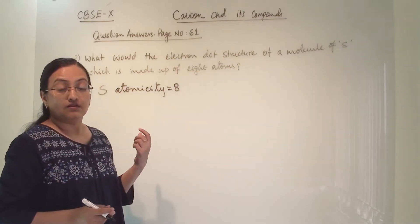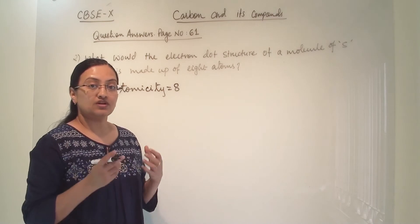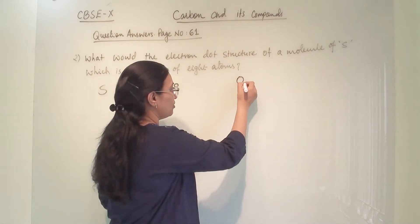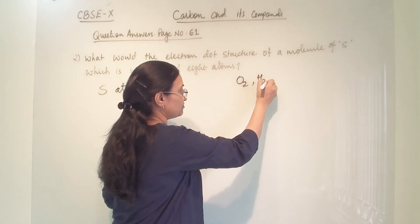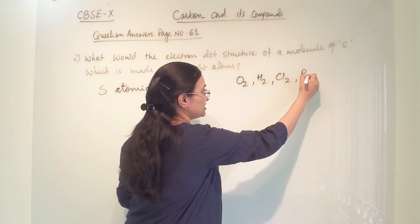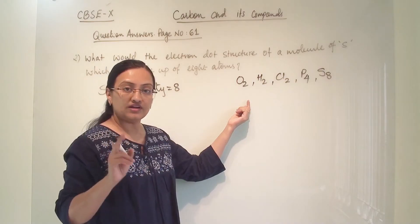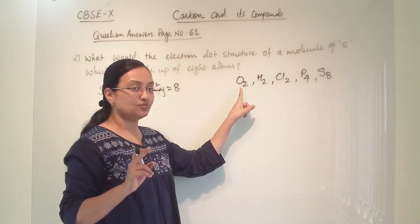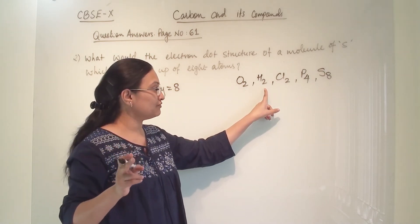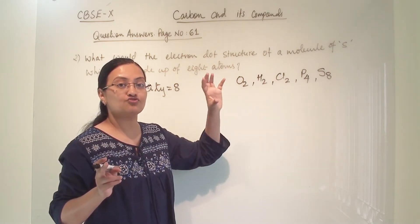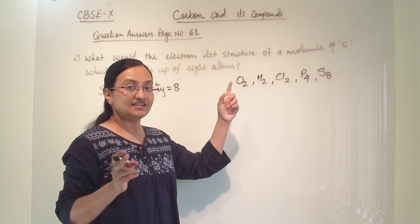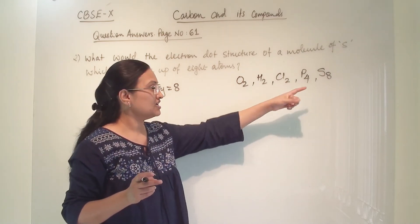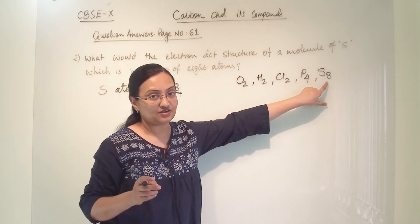We learned the atomicity concept in the previous chapter. Atomicity means atoms of the same element form a molecule. For example, oxygen's atomicity is 2, hydrogen's atomicity is 2, chlorine's atomicity is 2, phosphorus's atomicity is 4, and sulphur's atomicity is 8. The number of atoms joined together to form a stable molecule indicates the atomicity for that element.